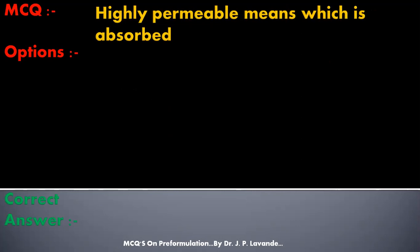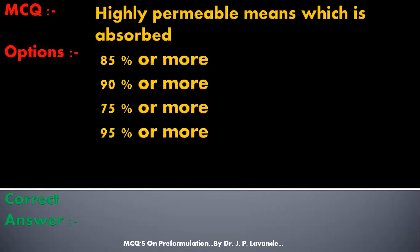Next multiple choice question: Highly permeable means the drug is absorbed at what percentage? Options: 85% or more, 90% or more, 75% or more, 95% or more. Correct answer is 85% or more. Highly permeable means the drug is absorbed 85% or more.